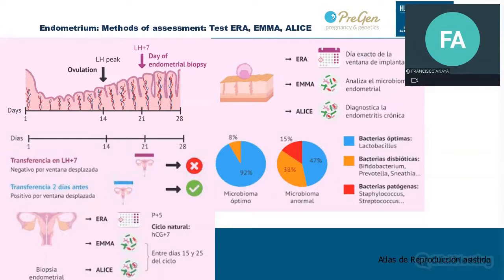The main criticisms of the ERA technique are that we perform it during a mock cycle previous to the transfer cycle, which may be different from the real one, and results are not consistent across all medical studies. However, it may be helpful in some cases of implantation failure. EMMA is a molecular test that studies the microbiota of the uterus. ALICE is used to rule out chronic endometritis, which could decrease success rates. Both are carried out from an endometrial biopsy during the secretory phase of the cycle prior to the embryo transfer.